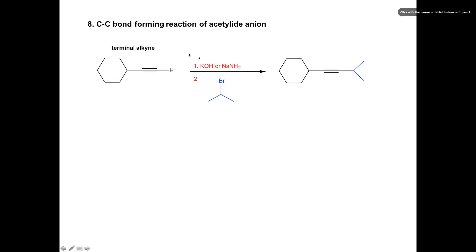The last reaction I want to talk about with alkynes is a very important one. All of the other reactions we've talked about so far are functional group transformations — changing from one functional group to another, such as an alkyne to an alkyl halide or to a carboxylic acid. This reaction is different: here we are forming a new carbon-carbon bond. This is important when we talk about synthesis and how we can build up molecules. To make this reaction proceed, you have to have a terminal alkyne — internal alkynes will not react.